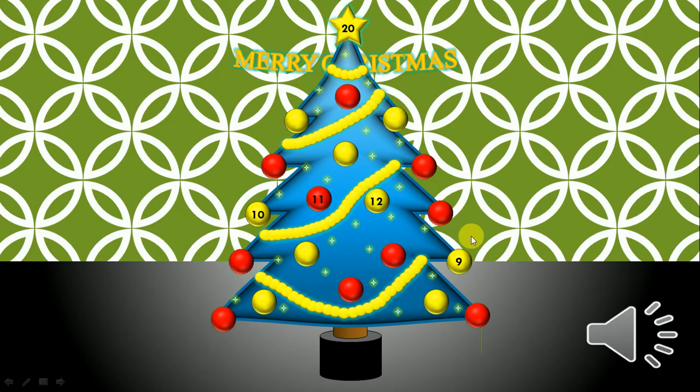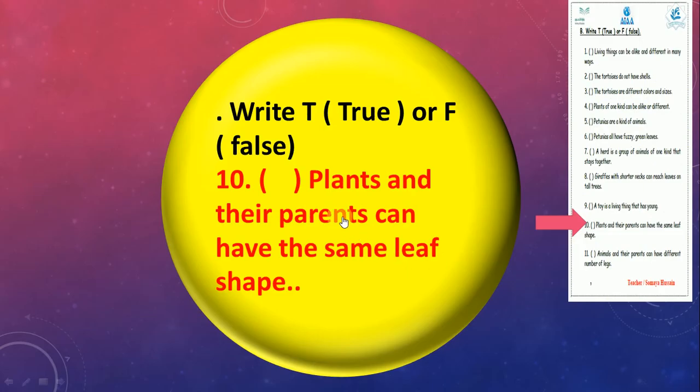Number nine: Plants and their parents can have the same leaf shape. Yeah, of course, true. Good job.